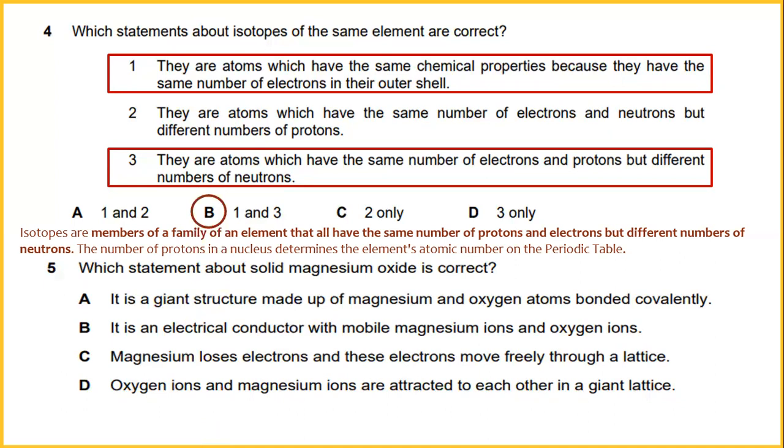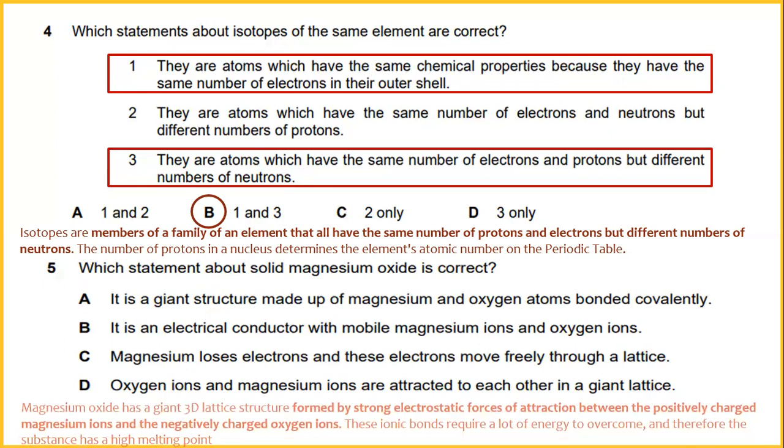Which statement about solid magnesium oxide is correct? Magnesium oxide has a giant 3D lattice structure formed by strong electrostatic forces of attraction between the positively charged magnesium ion and the negatively charged oxygen ion. These ionic bonds require a lot of energy to overcome, and therefore the substance has a high melting point. The answer for number five should be oxygen ions and magnesium ions are attracted to each other in a giant lattice.